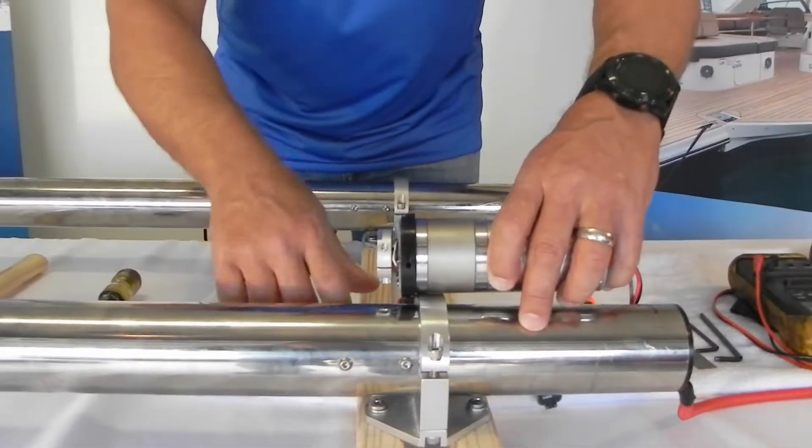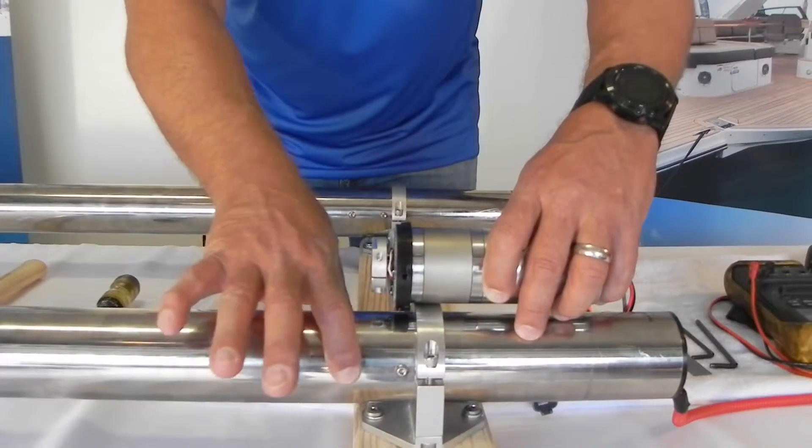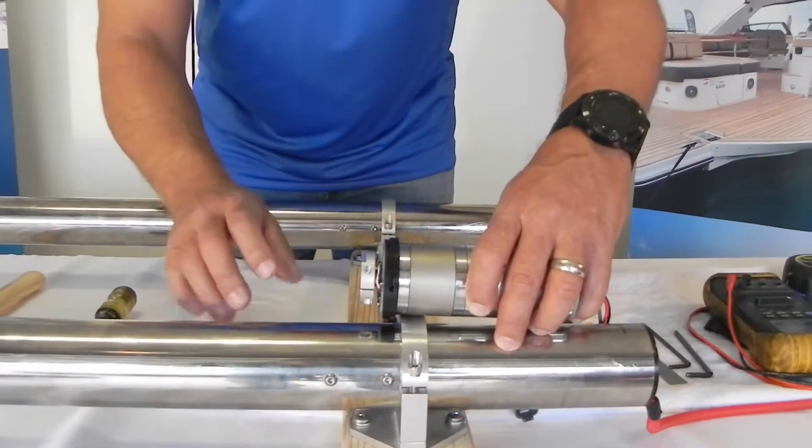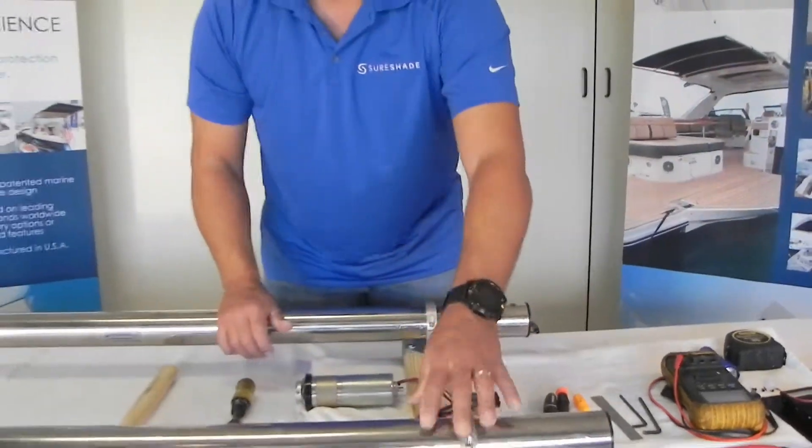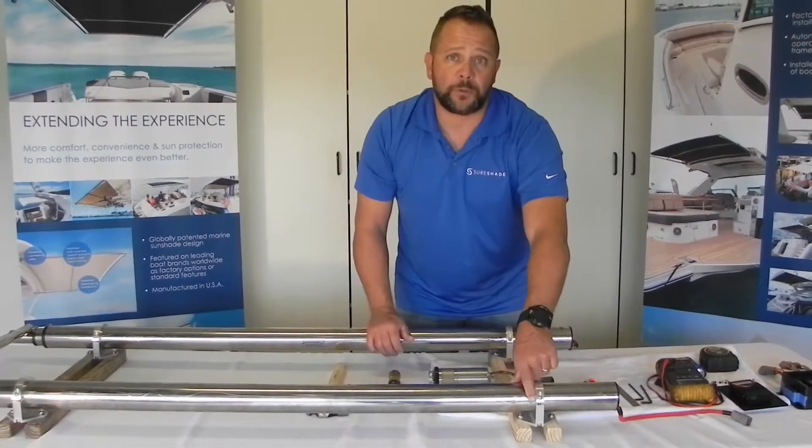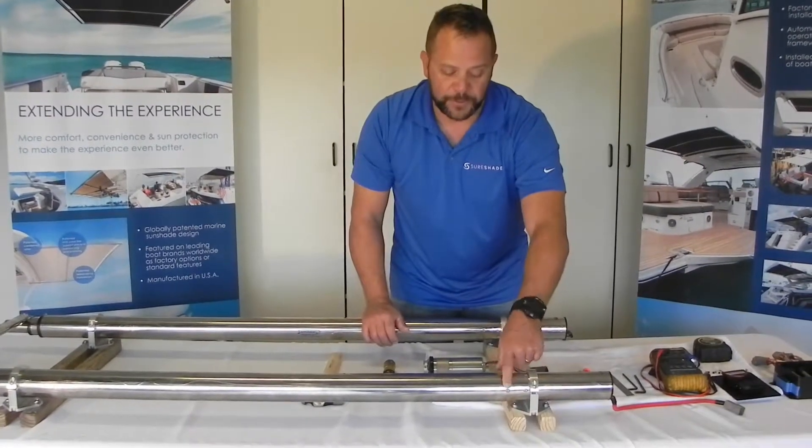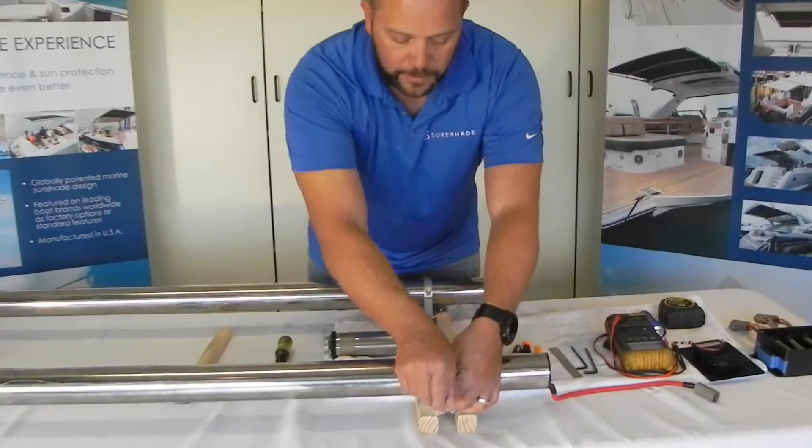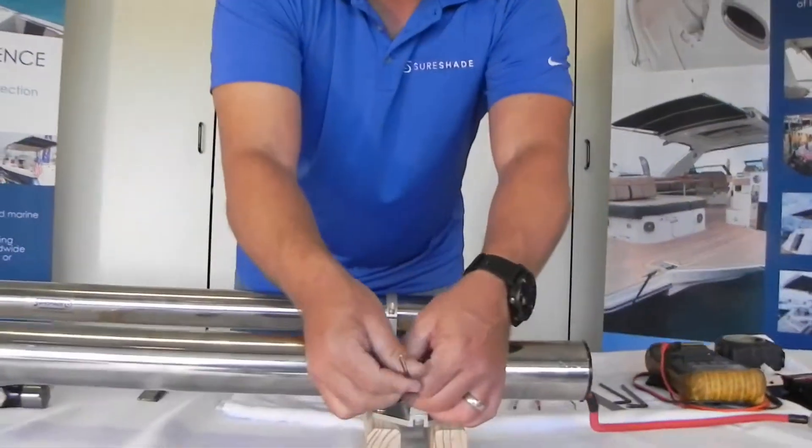These two screws here hold in your bearing assembly for your worm gears. Do not remove those, please. You're going to start seeing they will have a tamper-proof screw moving forward, so you'll easily be able to differentiate which ones you need to take out. So what we're going to do is go ahead and take our screws out that hold the motor in.